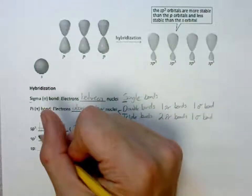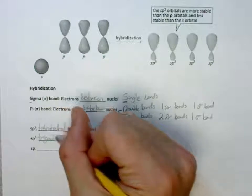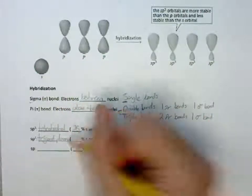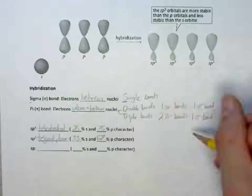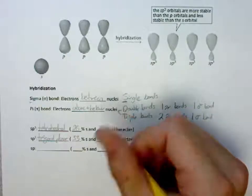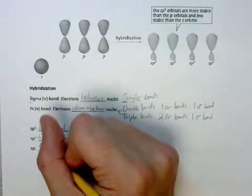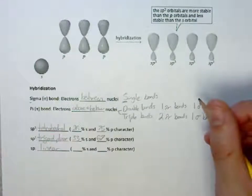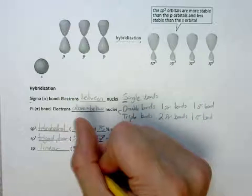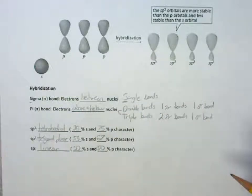For SP2, the shape is going to be trigonal planar. It's going to have a little bit more S character, a little less P character. For SP, the shape is going to be linear. And we're going to have a 50-50 character between S and P.